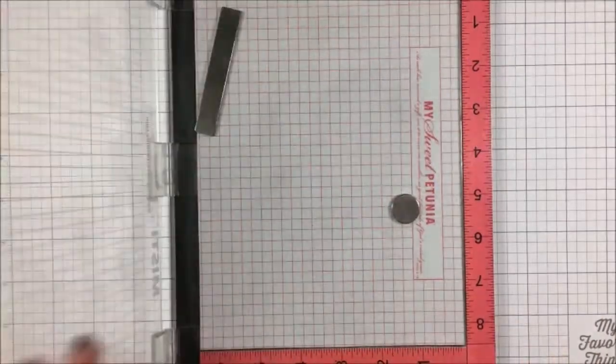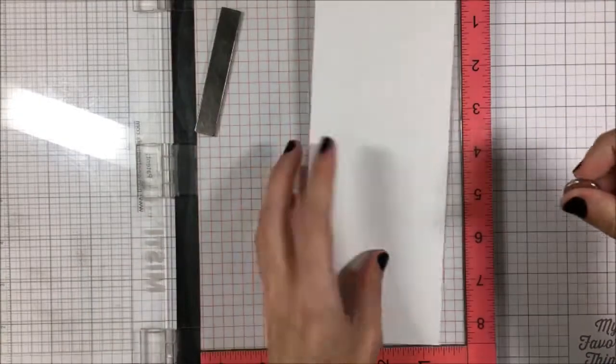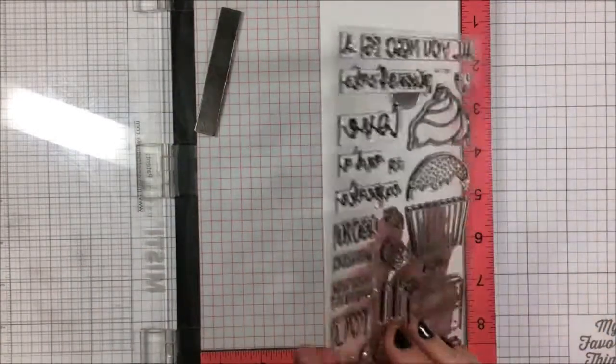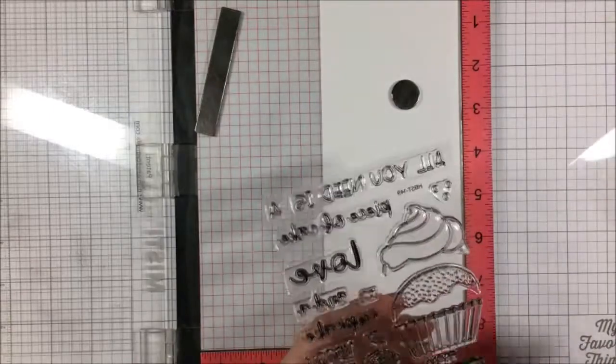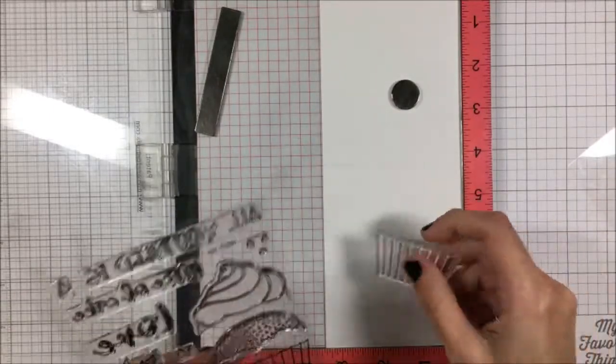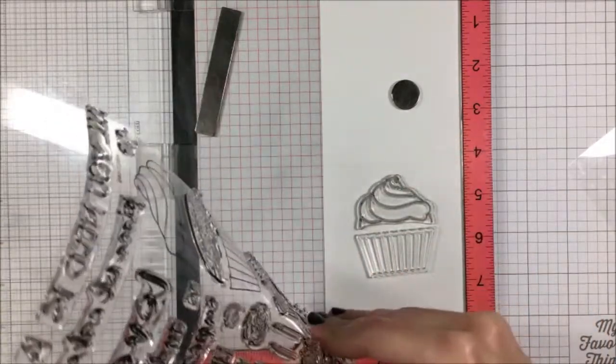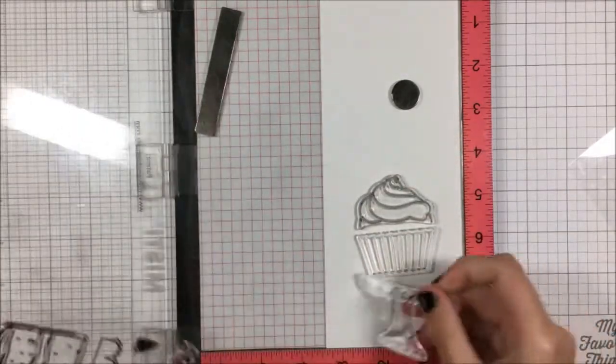First up I have my Misti out and I'm going to put in my piece of cardstock which is three and a half by eight and a half because I'm going to fold this to be three and a half by four and a quarter as the final size of my card. I'm going to get out my Honey Bee Stamps piece of cake stamp set. This is one I've wanted to use for a long time and I figured this was the perfect theme to use it.